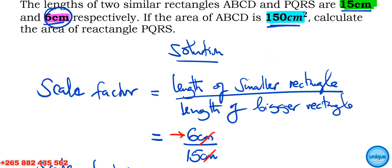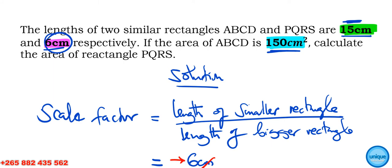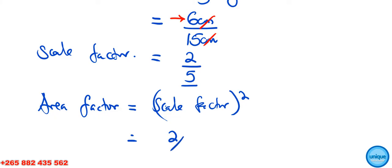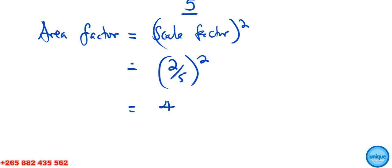Now since we're dealing with area, we're going to change that scale factor to the area factor. The area factor is the scale factor squared. So scale factor was 2/5. If you square this, 2 squared is 4, 5 squared is 25, so we get 4/25. This is our area factor.